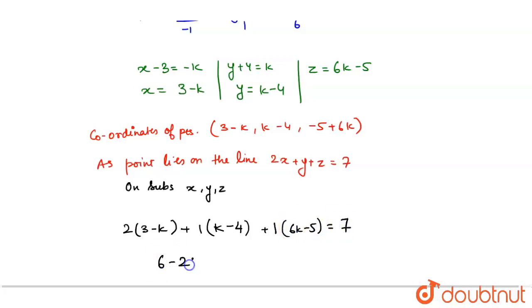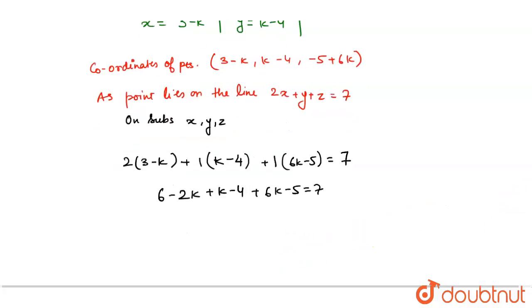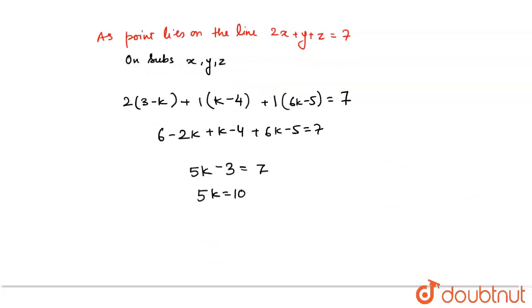So, 6 - 2k + k - 4 + 6k - 5 = 7. This gives 6 - 4 is 2, 2 - 5 is -3, and -2k + k is -k, -k + 6k is 5k. So, 5k - 3 = 7, 5k = 10, and k = 2.